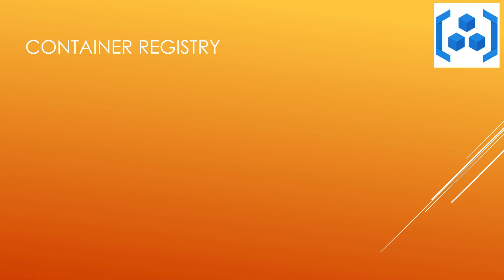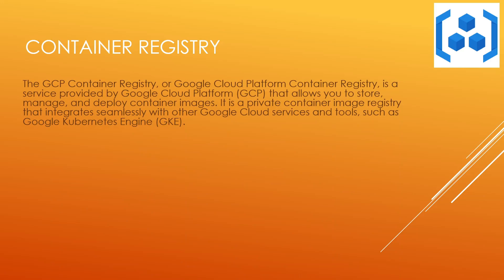The next one is Container Registry. The GCP Container Registry is a service provided by Google Cloud Platform that allows you to store, manage, and deploy container images. It's a private container image registry that integrates seamlessly with other Google Cloud services and tools such as Google Kubernetes Engine. With the GCP Container Registry, you can securely store your container images in a central repository, making it easier to share them with the development team or deploy them to your production environment. The registry supports popular container image formats such as Docker and provides features like Access Control List (ACL) to manage who can access and modify the images.